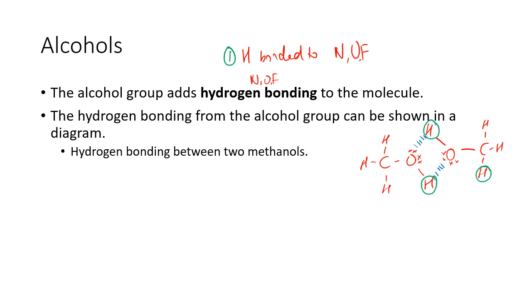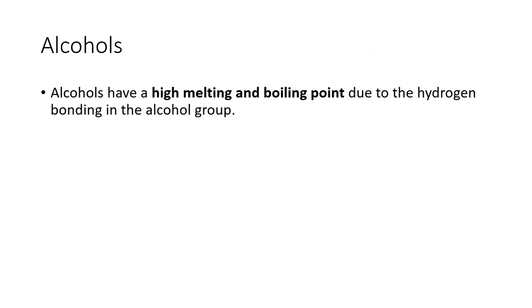That's condition one — the hydrogen bonded to the electronegative element — not that hydrogen over there, because that one isn't bonded to a very electronegative element. And condition two is the N, O, or F lone pair. As long as you have both conditions, you're going to have hydrogen bonding. So alcohols have a high melting and boiling point due to the hydrogen bonding within the alcohol group.